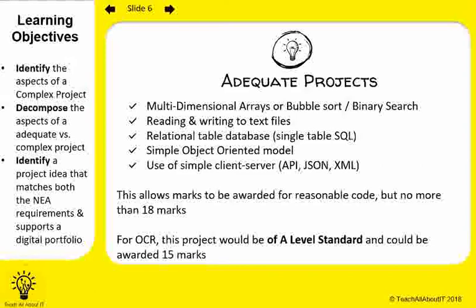Having a simple object-oriented model means you have created classes and are creating instances as objects, but you might not be creating them dynamically within the code as you go. You may also have created a simple client-server model. This allows for 18 marks for AQA or 15 marks for OCR, purely for your code. For OCR, anything at this level is of an A-Level standard. You don't have to do all five features — you only need to select a selection of them. When we talk about project complexity, it's about the line of best fit.